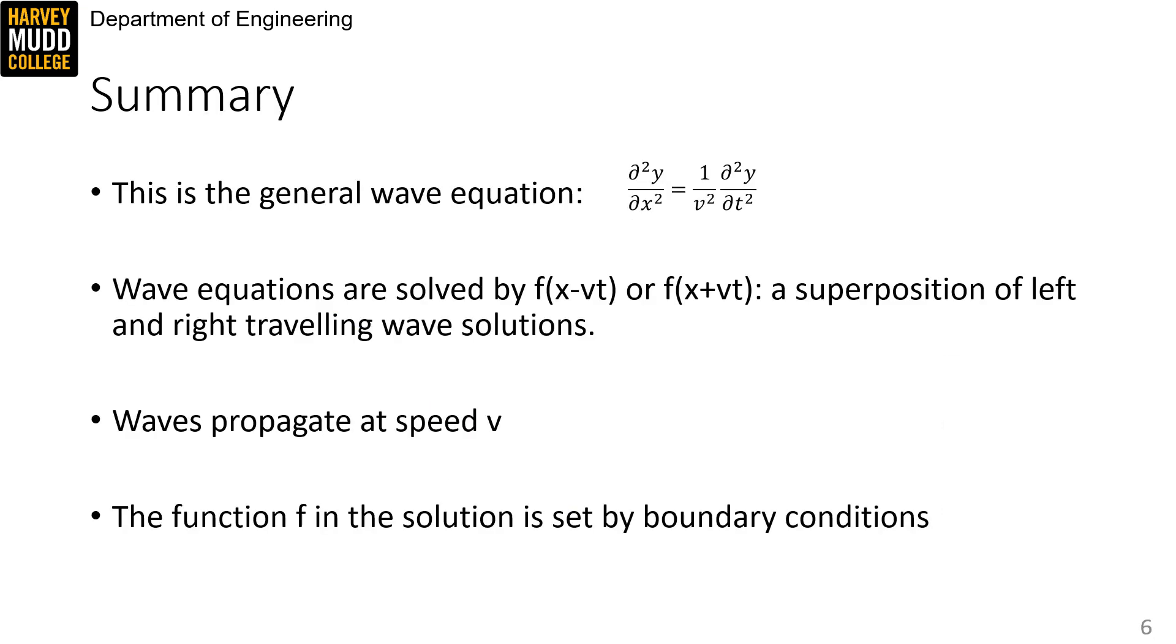So in summary, this is the general wave equation. Wave equations are solved by f of x minus vt or f of x plus vt, a superposition of left and right traveling wave solutions. The waves propagate at a speed v. And the function f in the solution is set by boundary conditions.